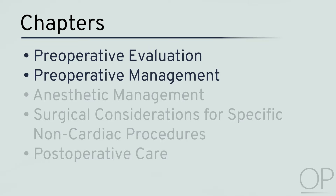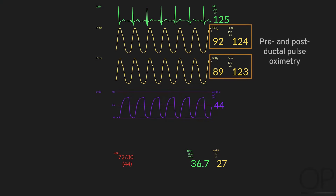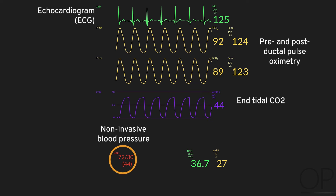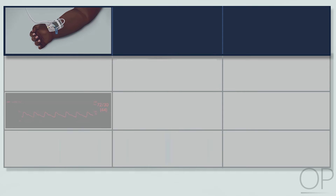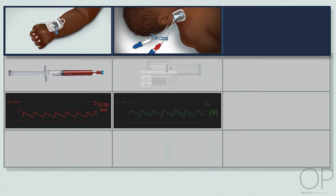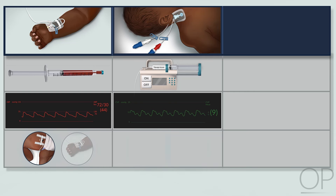Preoperative Management. Standard monitors include pre- and post-ductal pulse oximetry, end-tidal CO2, ECG, noninvasive blood pressure, and temperature. Depending on the clinical status and the extent of the surgery, close monitoring of blood pressure, frequent blood gas samples for ventilation adjustments, and secure venous access for vasopressors may be necessary. The arterial blood pressure can be monitored via an umbilical artery catheter or a peripheral arterial line. CVP and mixed venous saturation can be surveilled from adequately placed umbilical vein catheters or PICC lines.